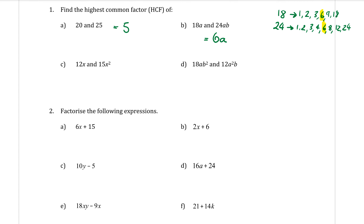Example C: 12 and 15 — the highest number you can divide both by is 3. Now looking at the letters, one has an X and one has an X squared. So I can only bring out one of the X's as a common factor — the other one had two, but only one of them was in common.